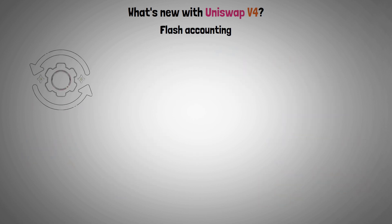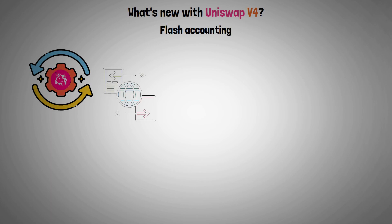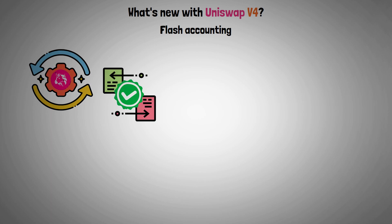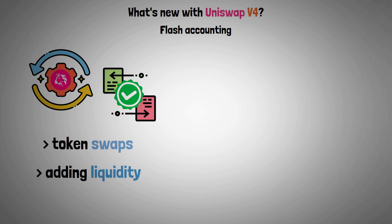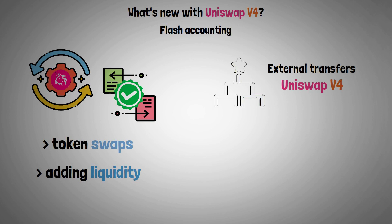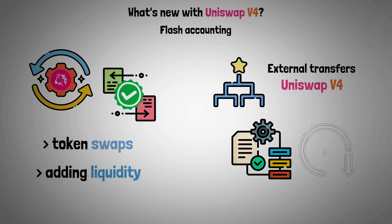Flash Accounting. Prior iterations of Uniswap required the transfer of tokens to complete every operation, including token swaps and adding liquidity to pools. In Uniswap V4, external transfers are only made at the very end, which streamlines pool operations and lowers expenses.